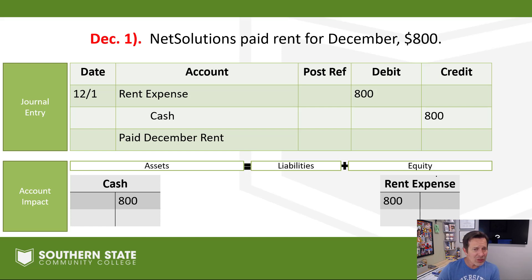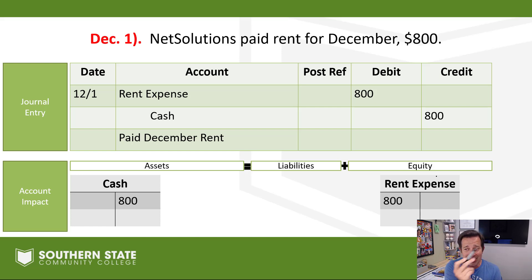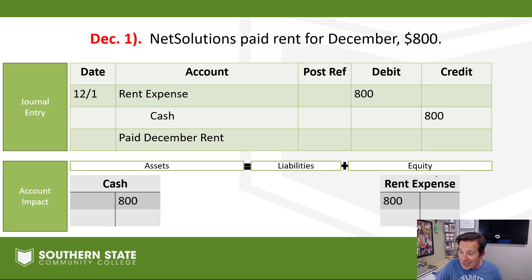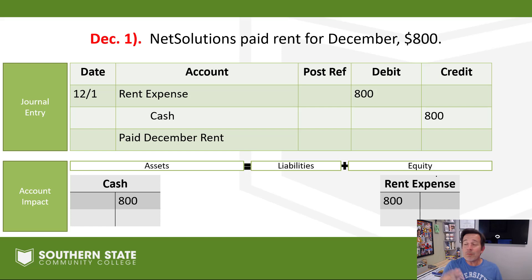If you didn't get it right, make a correction. Accountants are not very good at using pens — we don't want to use pens. We want to use pencils so if we mess up, we can just erase it and make it a little bit neater. But hopefully you got it right and we don't have to erase anything.